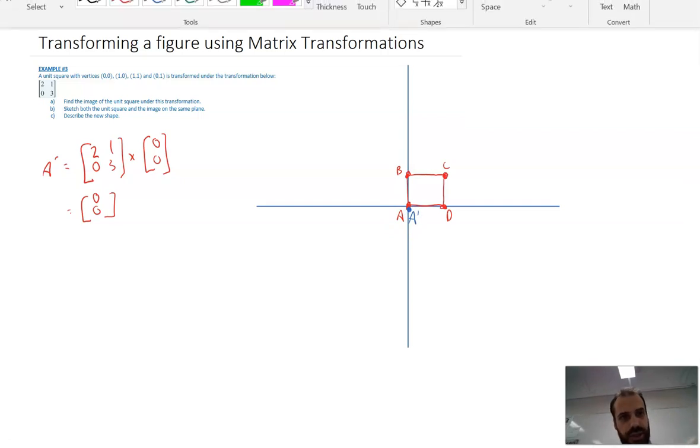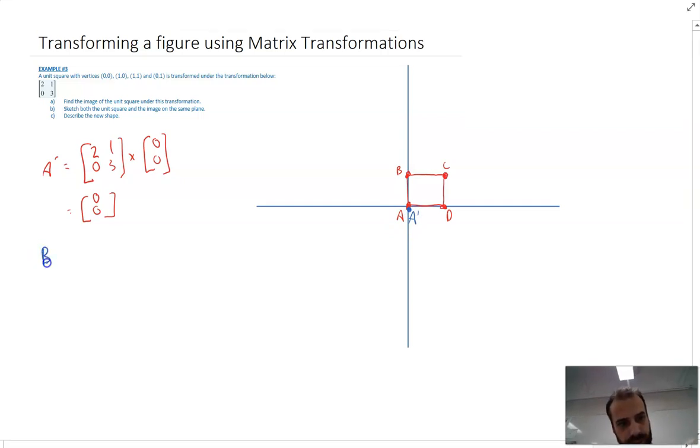Now on to our next one. The image of B is going to be equal to our transformation matrix times whatever point B is, so that's (0,1). Okay, and you can do the matrix multiplication there—I'm not going to do that on screen. So I'm going to get (1,3).